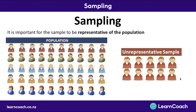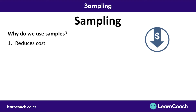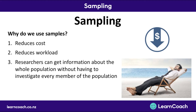If you did a survey with only certain people, you might find results applicable to that person but none of the others, so it wouldn't be very helpful. So why do we use samples instead of a census? Samples reduce cost and workload. It means researchers can get information about the whole population without having to investigate every single member of that population, so samples are really helpful.